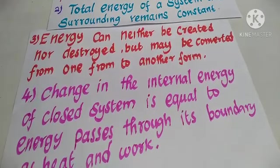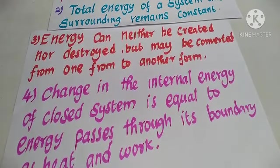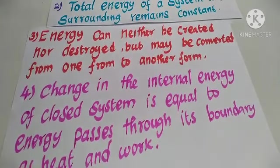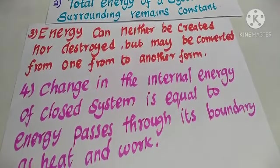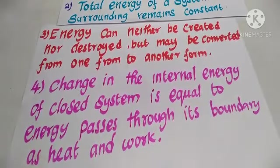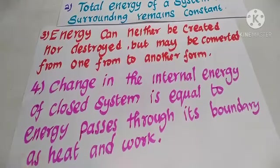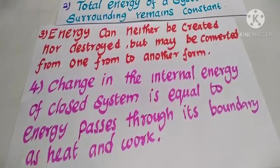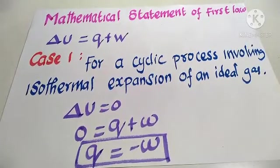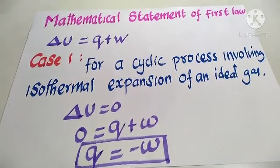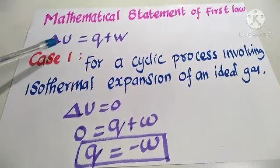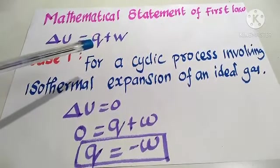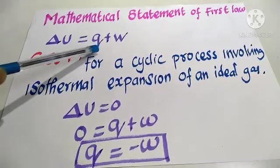Heat and work are the two ways of changing a system's internal energy. The mathematical statement of the first law of thermodynamics is: delta U equals Q plus W, where delta U is the change in internal energy, Q is the heat absorbed by the system, and W is the work done.